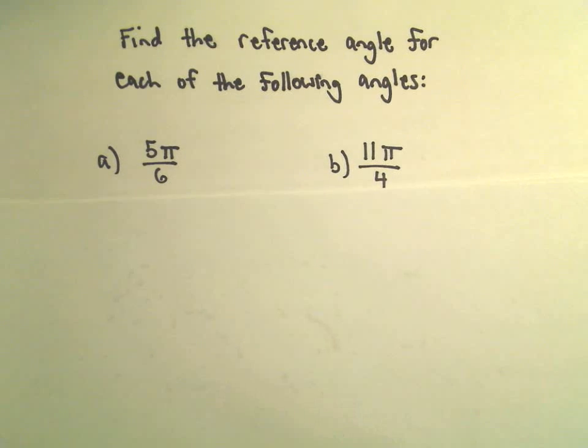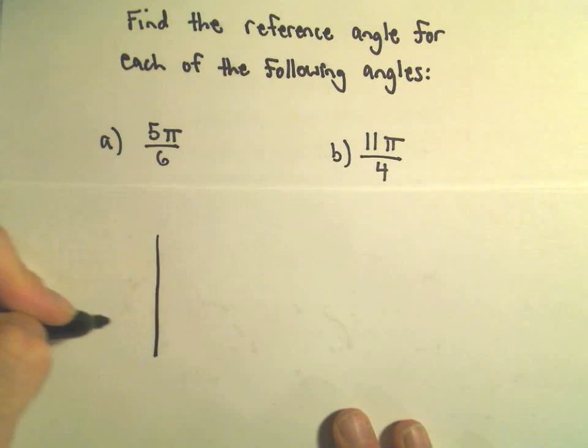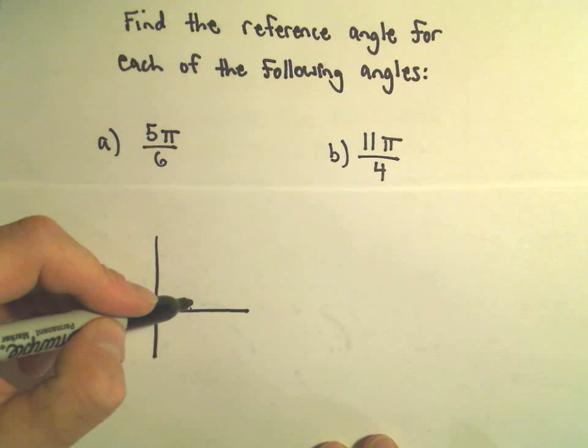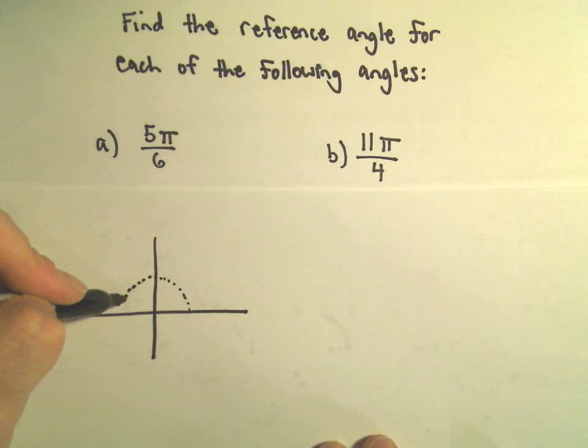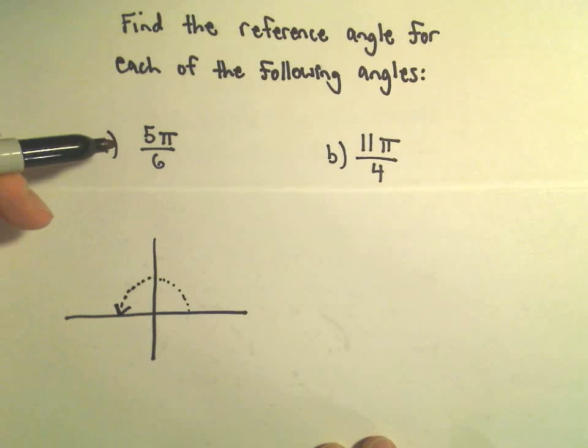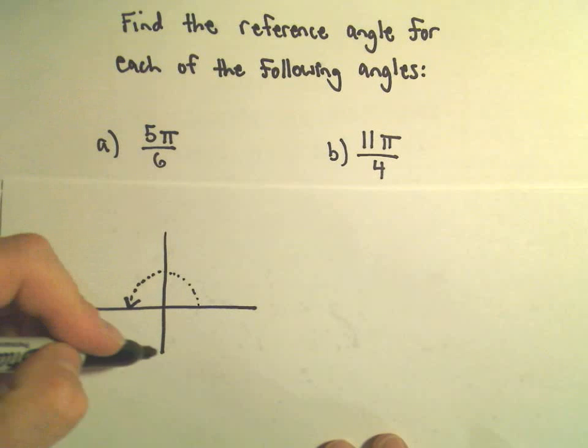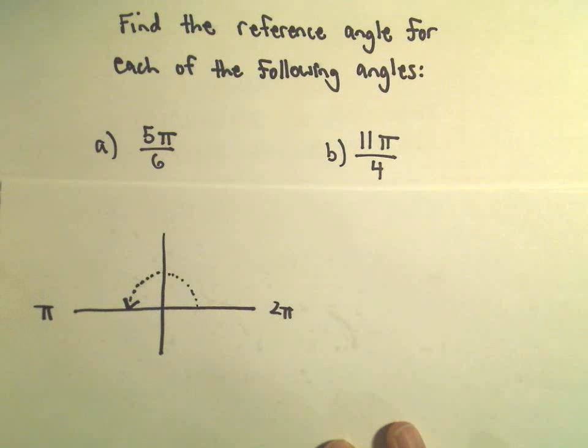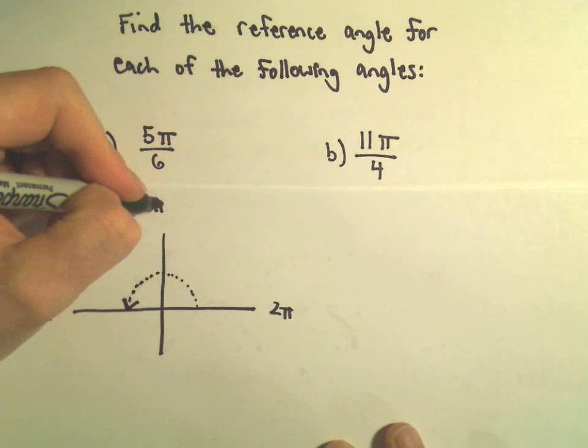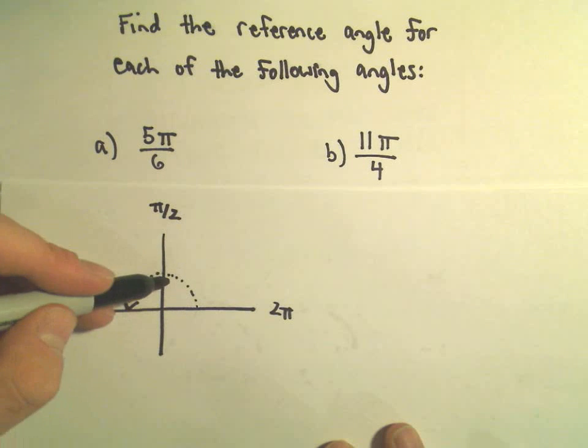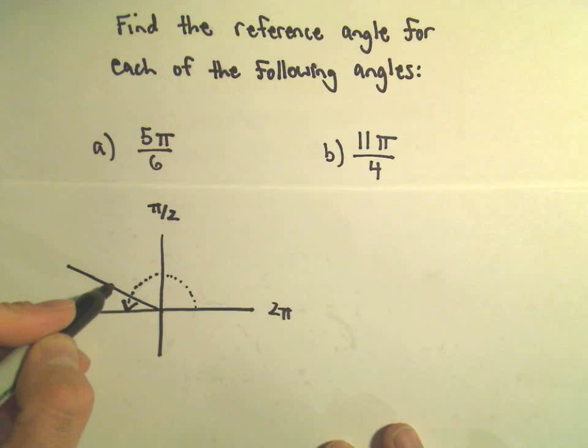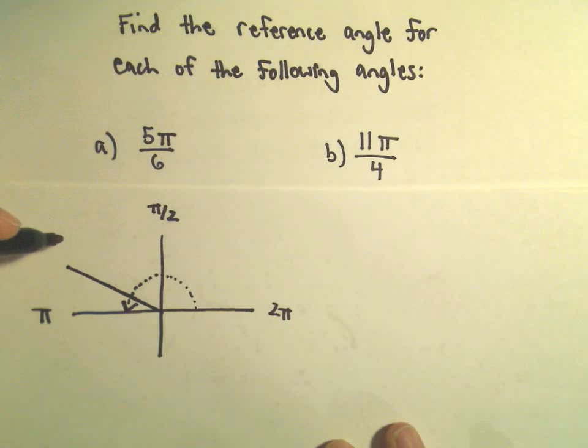Let's find the reference angle for 5π over 6. I'm going to do the same thing as before and just try to sketch these. If we went halfway around, we know we're going counterclockwise since we're using positive angles. Remember the whole distance around would be 2π. If we go halfway we would say that's π radians. π over 2 would put us at the top. So 5π over 6 is going to be somewhere here in quadrant 2.